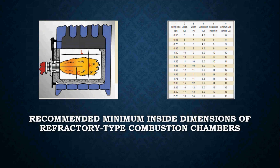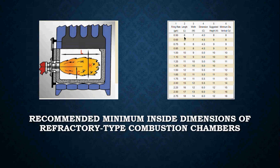For recommended minimum inside dimensions of refractory-type combustion chambers, we take length, width, and the C dimension — the measurement from the floor to the nozzle centerline. For a 0.5 gallon per hour nozzle, the minimum length is 8 inches, minimum width is 7 inches, and the C dimension is at least 4 inches. You need a ruler to take these measurements.